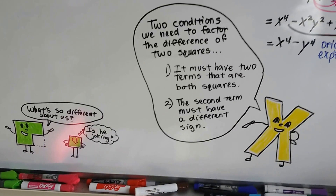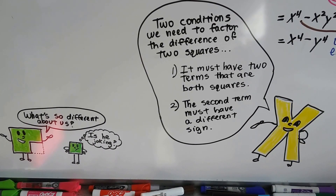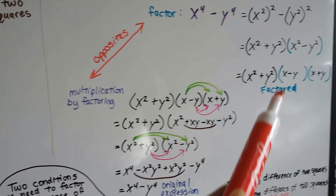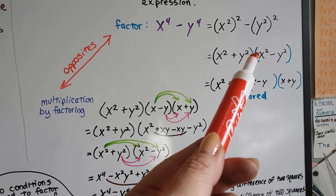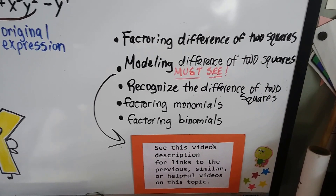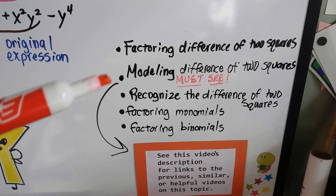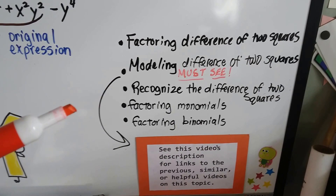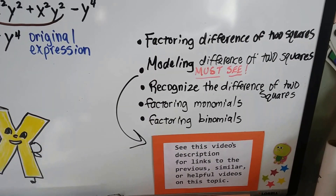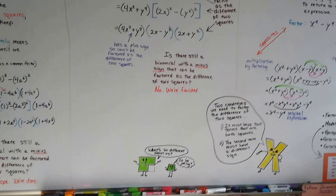Remember, there are two conditions we need to factor the difference of two squares: it must have two terms that are both squares, and the second term must have a different sign than the first. The first term could be negative as long as the second one is positive — so don't think it always has to have a minus sign in the middle. If you want to see construction paper modeling of the difference of two squares or videos on recognizing it, or factoring monomials and binomials, all those links will be in the description.